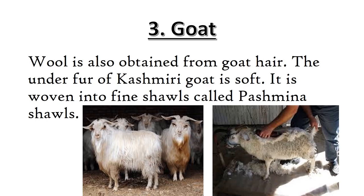The third wool-yielding animal is goat. Wool is also obtained from goat hair. The under fur of Kashmiri goat is soft. It is woven into fine shawls called Pashmina shawls.